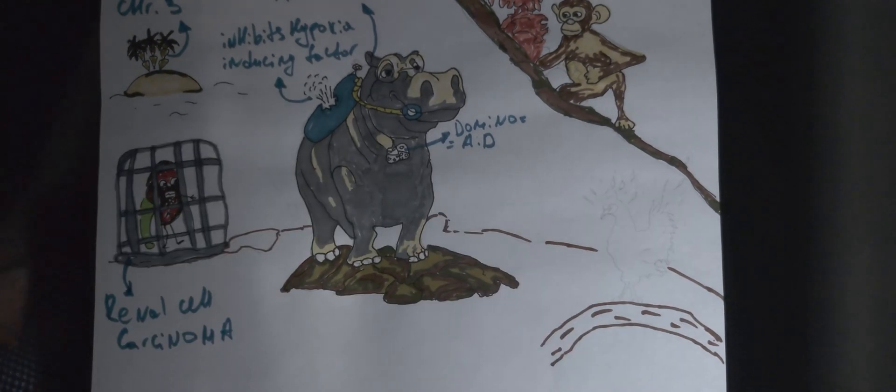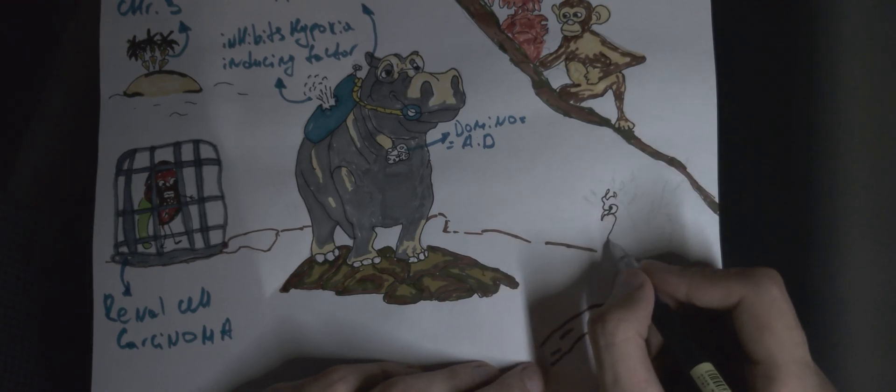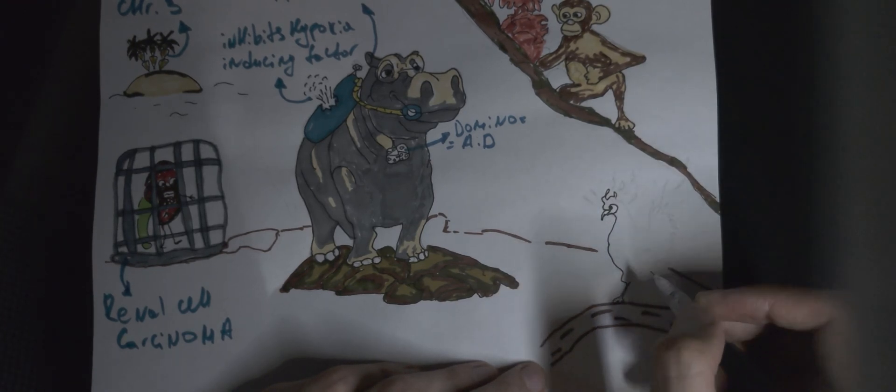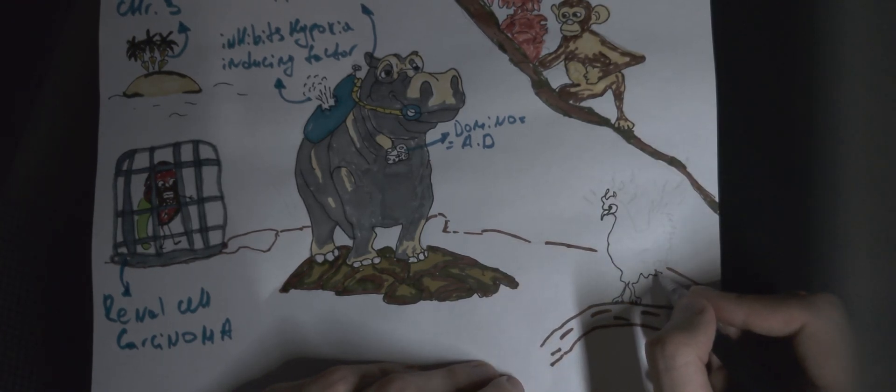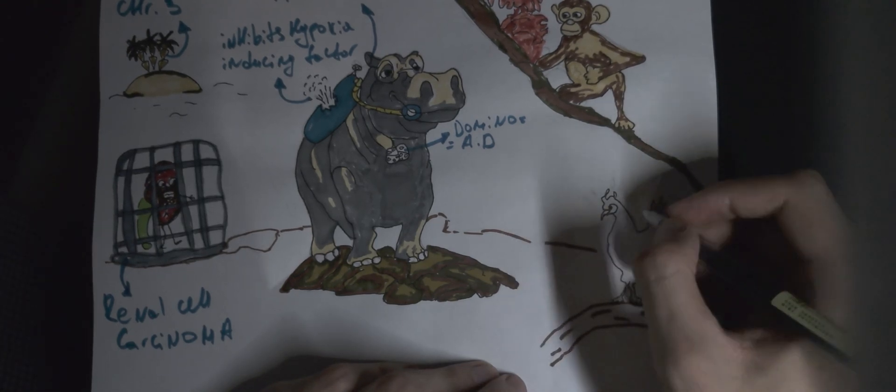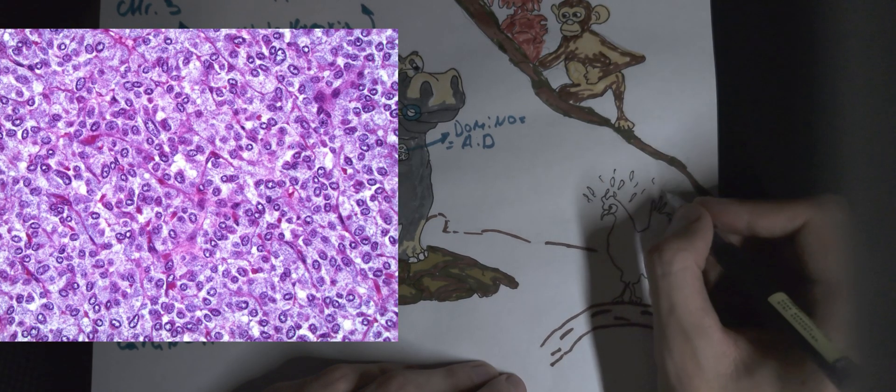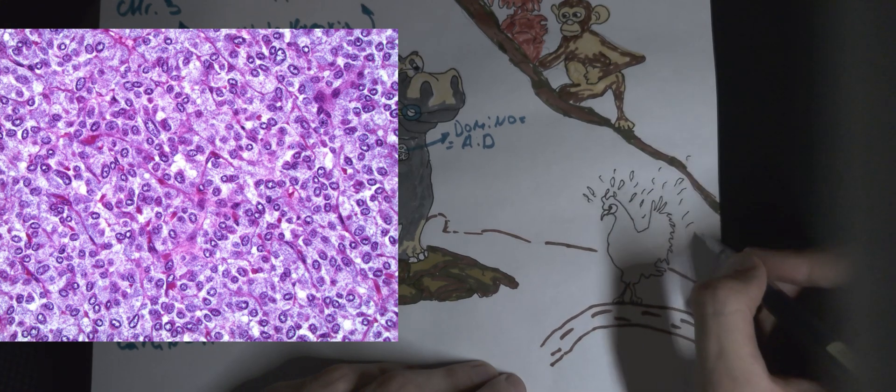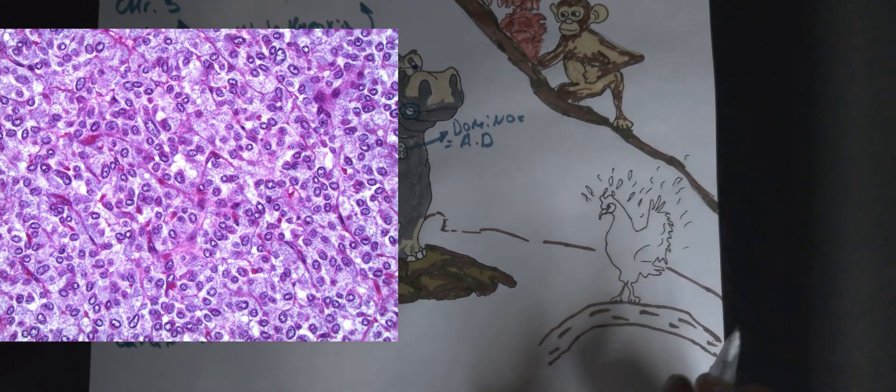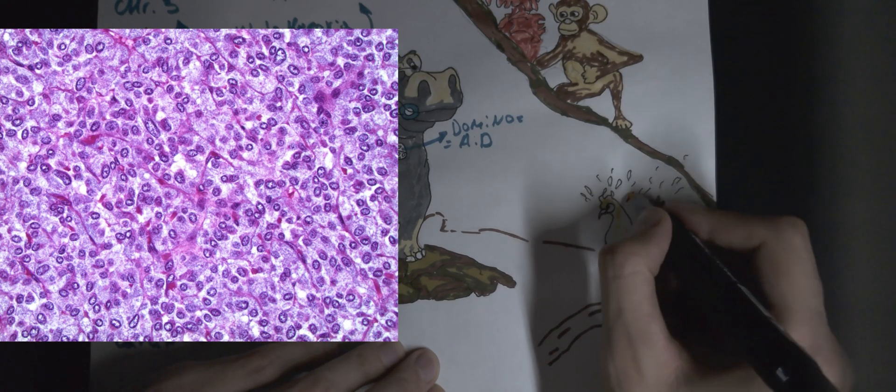People with VHL mutation are highly susceptible to developing pheochromocytoma, a type of neuroendocrine tumor that originates in chromaffin cells. These specialized cells play a crucial role in producing hormones essential for the body's functioning and can be found within the adrenal glands. This genetic predisposition creates a unique vulnerability for individuals affected by VHL mutation, paving the way for the formation of pheochromocytomas.